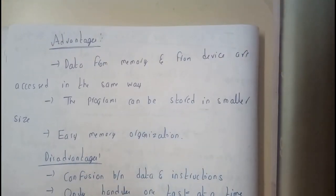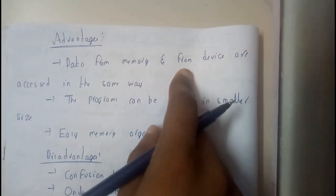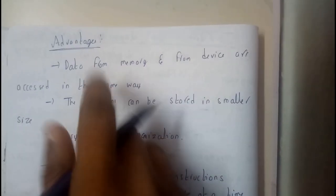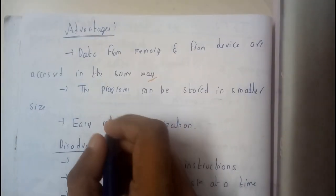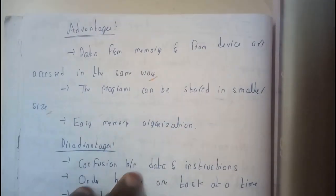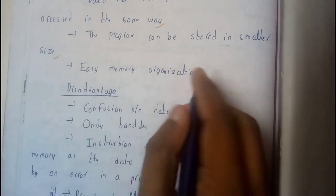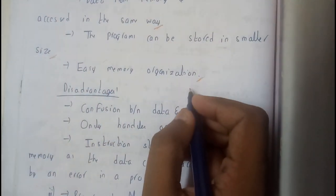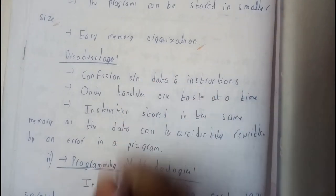What are the advantages? Data from memory and from devices are accessed in the same way — that's an advantage. The program can be stored in a smaller size — that's also an advantage. And memory organization will be really easy.